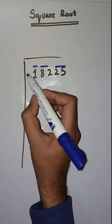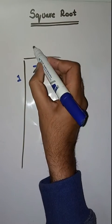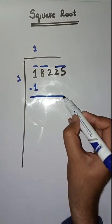So first we have to solve 1. So we take a number 1. 1 times 1 is 1. Minus that, we get 0.